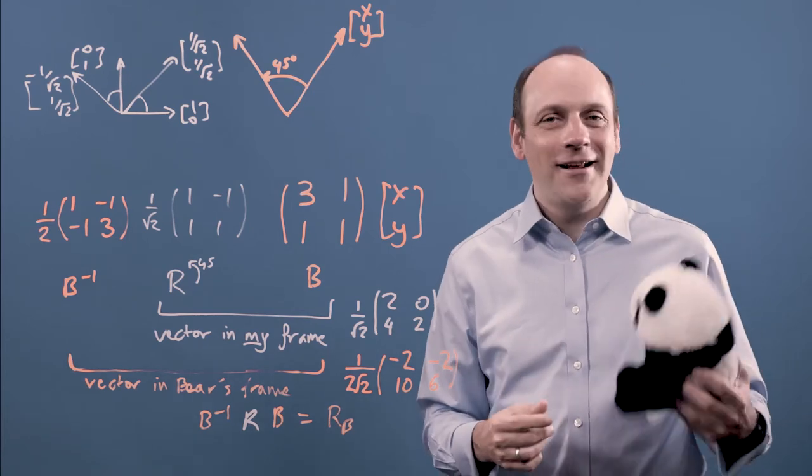So thanks a lot, Bear. You really helped us out to understand all this stuff. So what we've done in these two videos is we've looked at how the numbers in a vector change when we change the basis, and we've thought about the coordinate systems and how to do transformations in non-orthogonal coordinate systems.